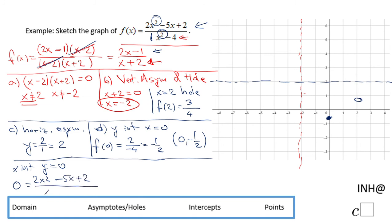When is this quotient equal to 0? When the numerator 2x squared minus 5x plus 2 equals 0.